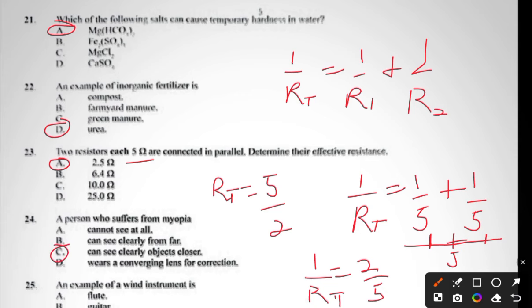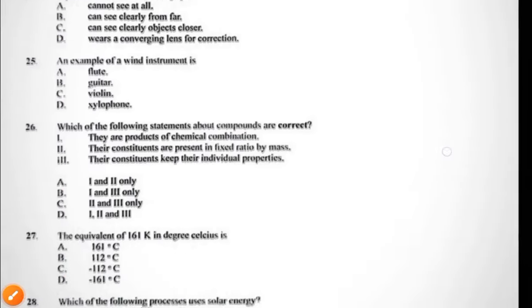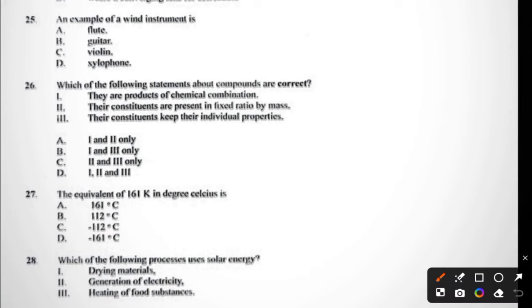Question twenty-four: a person who suffers from myopia cannot see at all, cannot see clearly from afar, can see clearly objects closer, or wears a converging lens for correction. A person who suffers from myopia has short-sightedness, so they can see clearly objects closer. Question twenty-four is C. Question twenty-five: an example of wind instruments is flute, guitar, violin, or xylophone. Question twenty-five is A, flute, because you have to blow into it.